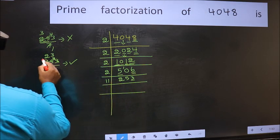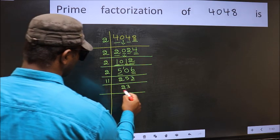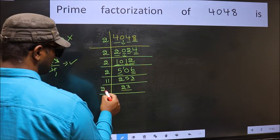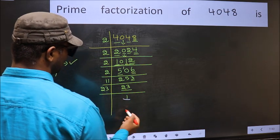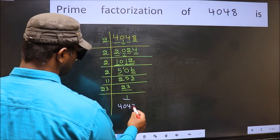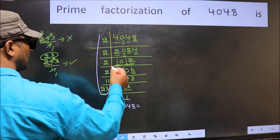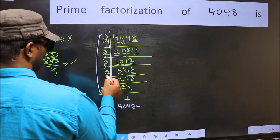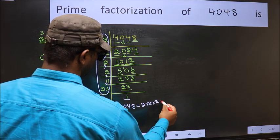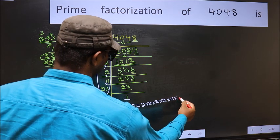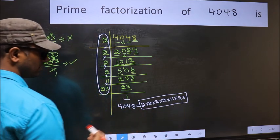So 11 here, and here we should write this number: 23. Now we have 23. 23 is a prime number, so 23 times 1 is 23, and we get 1 here. So the prime factorization of 4048 is the product of these numbers: 2 times 2 times 2 times 2 times 2 times 2 times 11 times 23. This is the prime factorization of 4048.